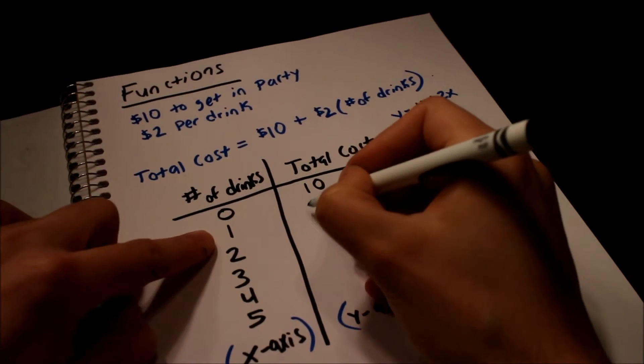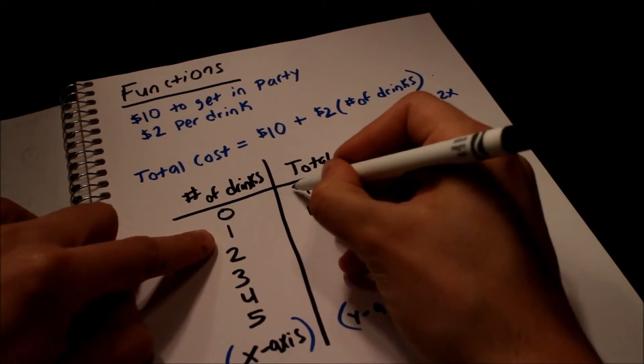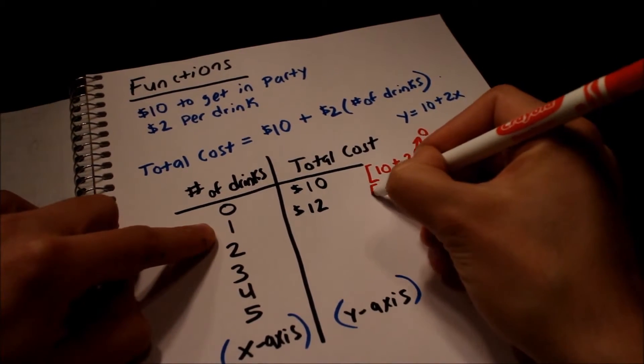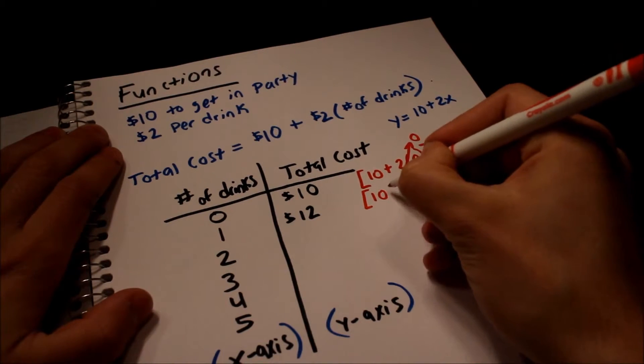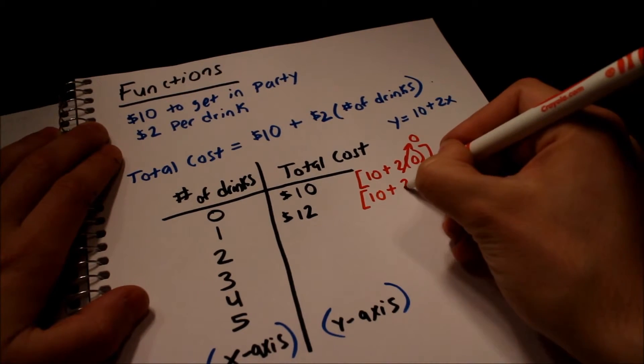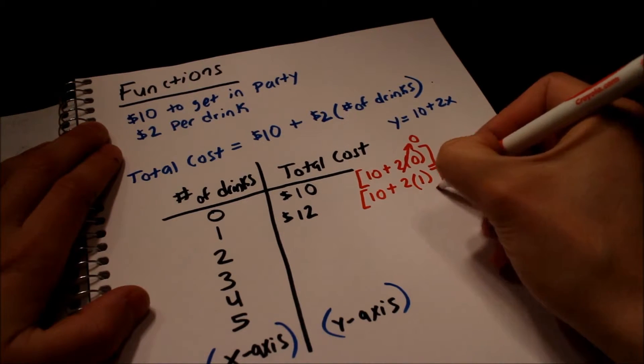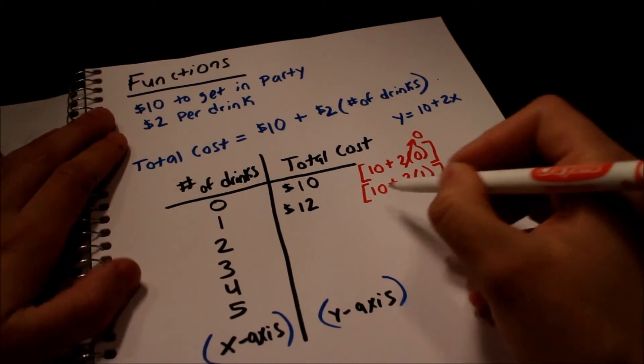So let's say we had one drink. What's that going to be? That's going to be twelve dollars. Because if we look at the equation here, this function, it's going to be ten plus two multiplied by one. Two times one is two, plus ten is twelve. So you get the idea.